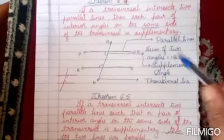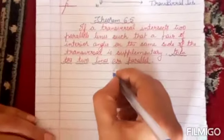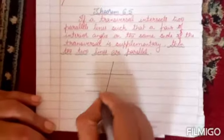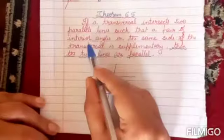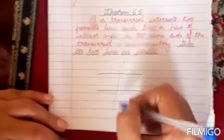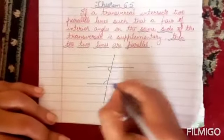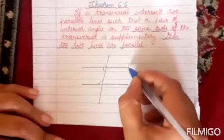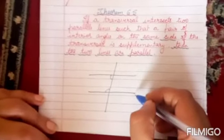Let me draw once again. If a transversal intersects two parallel lines, then each pair of interior angles on the same side of the transversal is supplementary. Then these two lines are parallel — that is the addition.